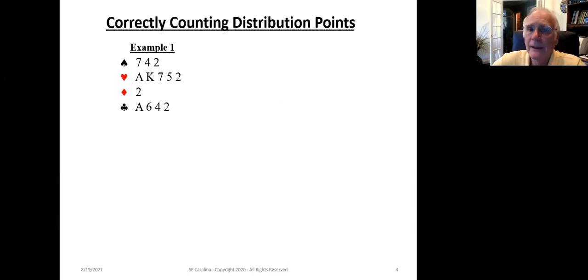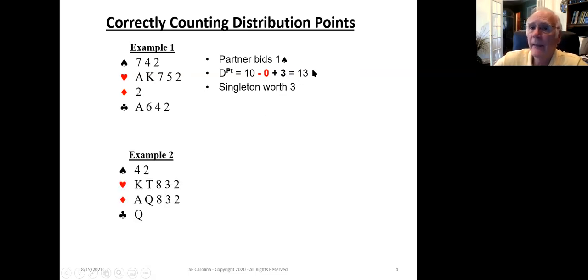Let's take a look at an example here and make sure that we're correctly counting our distribution points. In this one here, partner has bid one spade. We've got three spades, so we have a magic fit. We have 5 HCP plus 3 distribution. So we've got a singleton here. And that singleton, we're going to count as worth 3. So we're going to go ahead and add that in. Now we've got 13 distribution points.